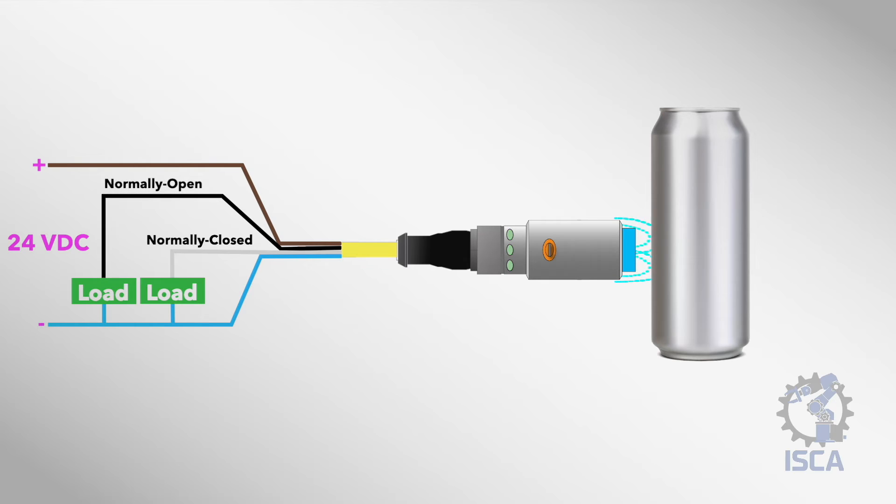By monitoring these NO and NC output wires, external controls or a PLC can react accordingly when the capacitive sensor changes state between target detection and non-detection.